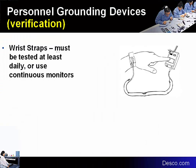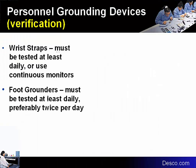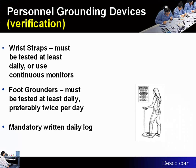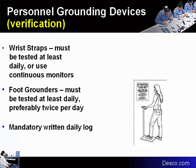Personal verification is required to make sure devices are functioning properly. The wrist strap must be tested by a testing system at least daily unless continuous monitors are used. A continuous monitor is wired to ground at the workstation, monitoring the work cable mat as well as the wrist strap. Foot grounders must also be tested at least daily, preferably twice — when you leave the EPA area and again when re-entering. It's required to have a mandatory written log of all testing.